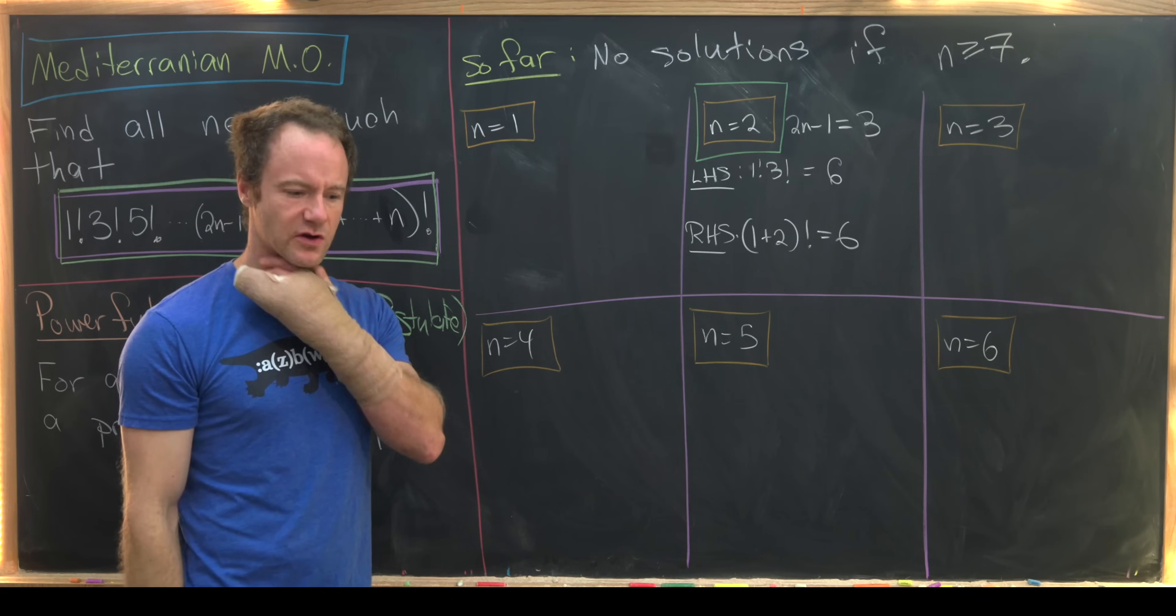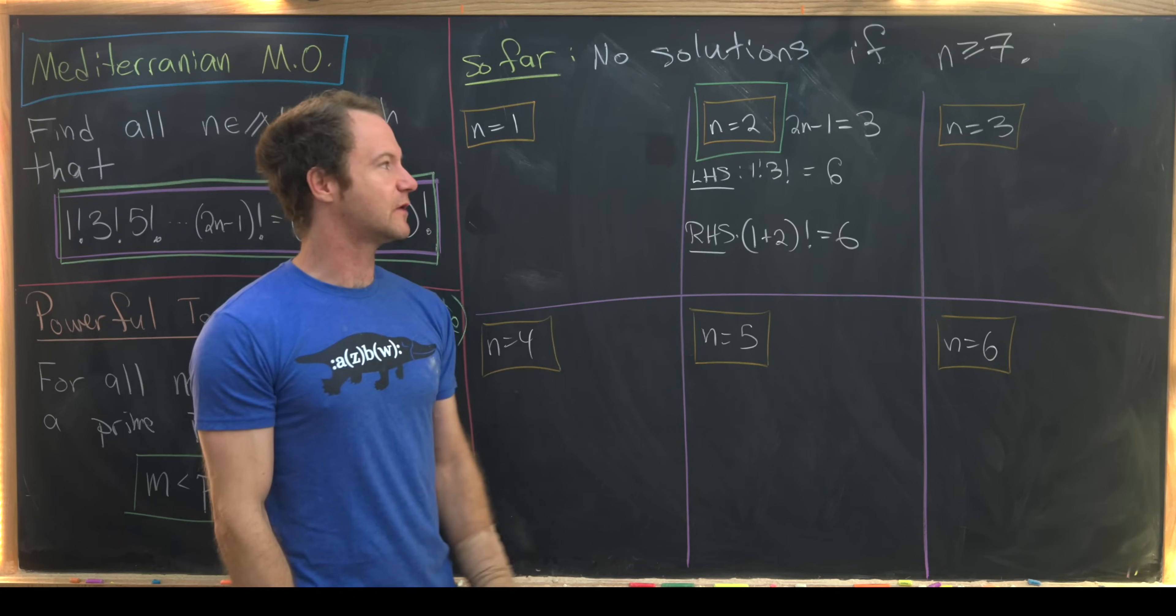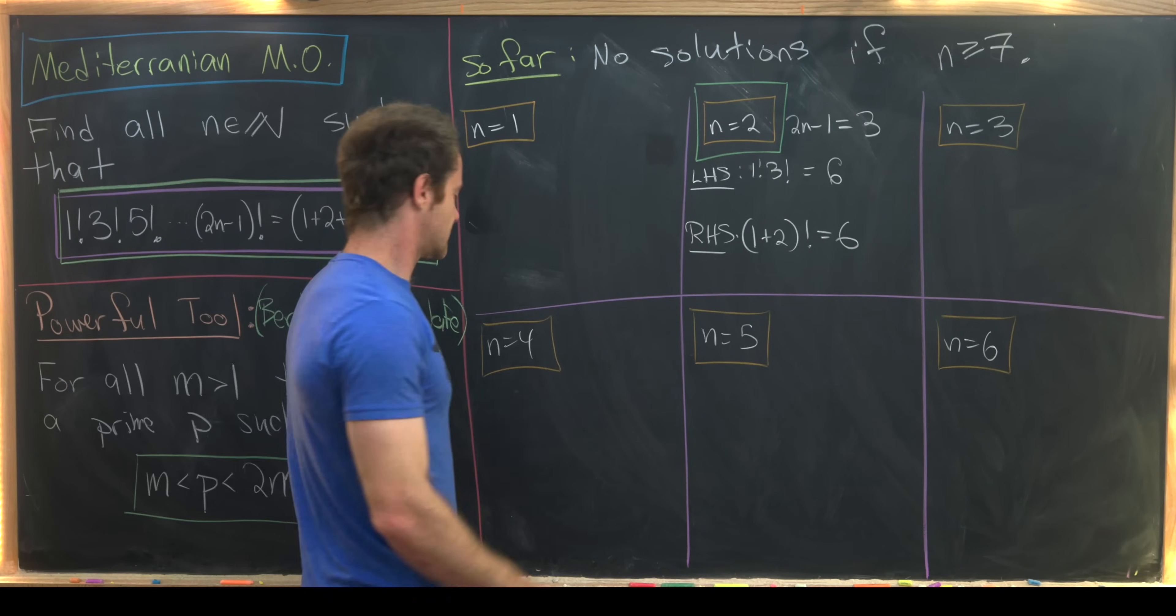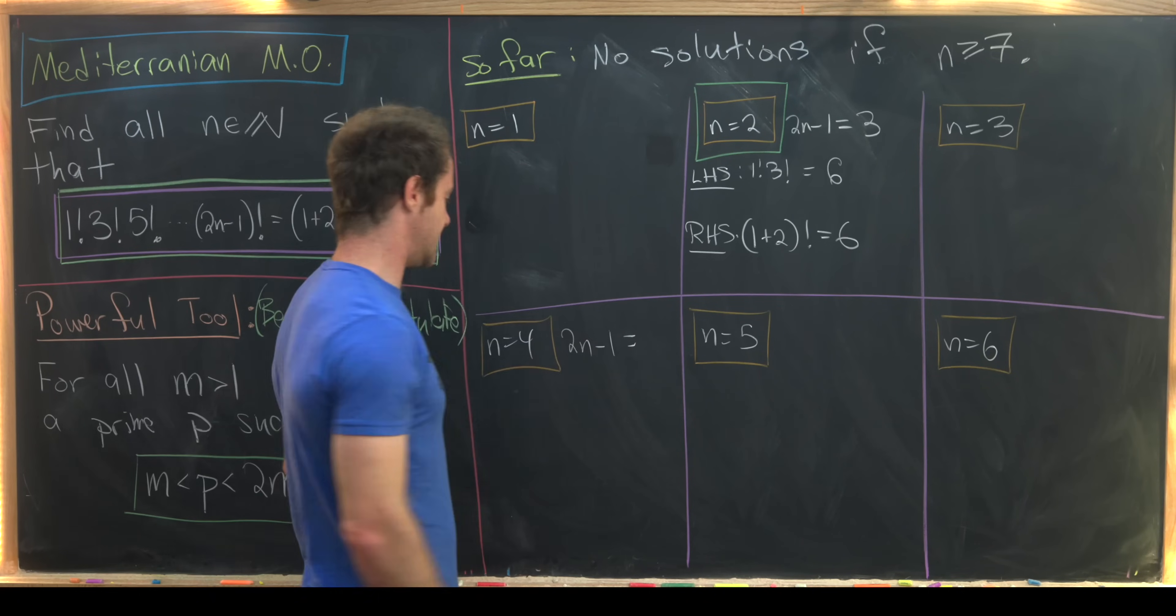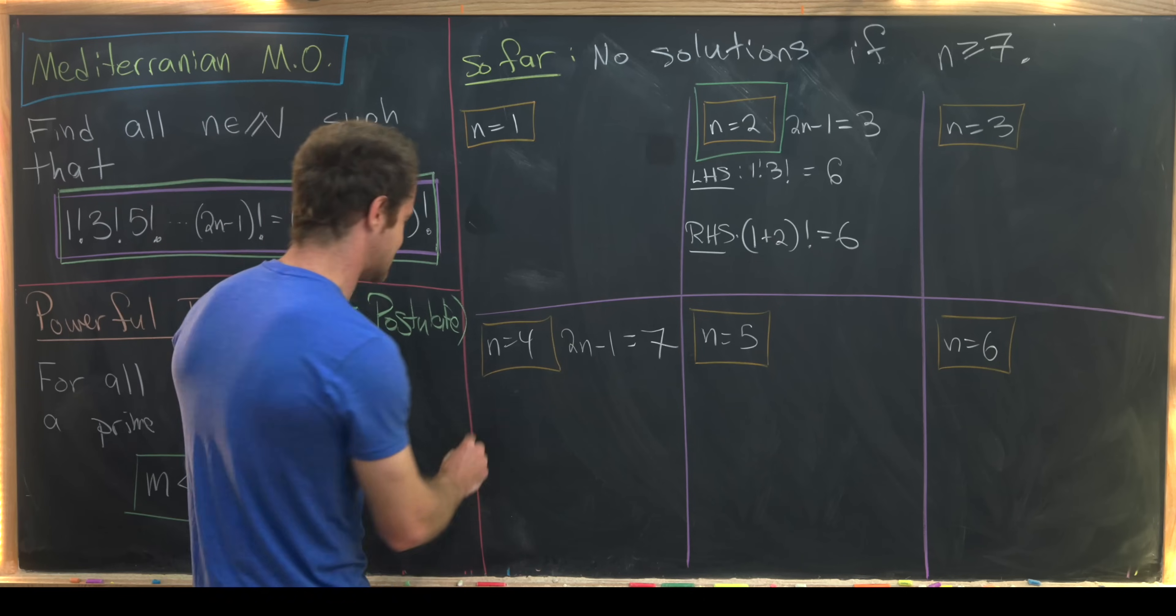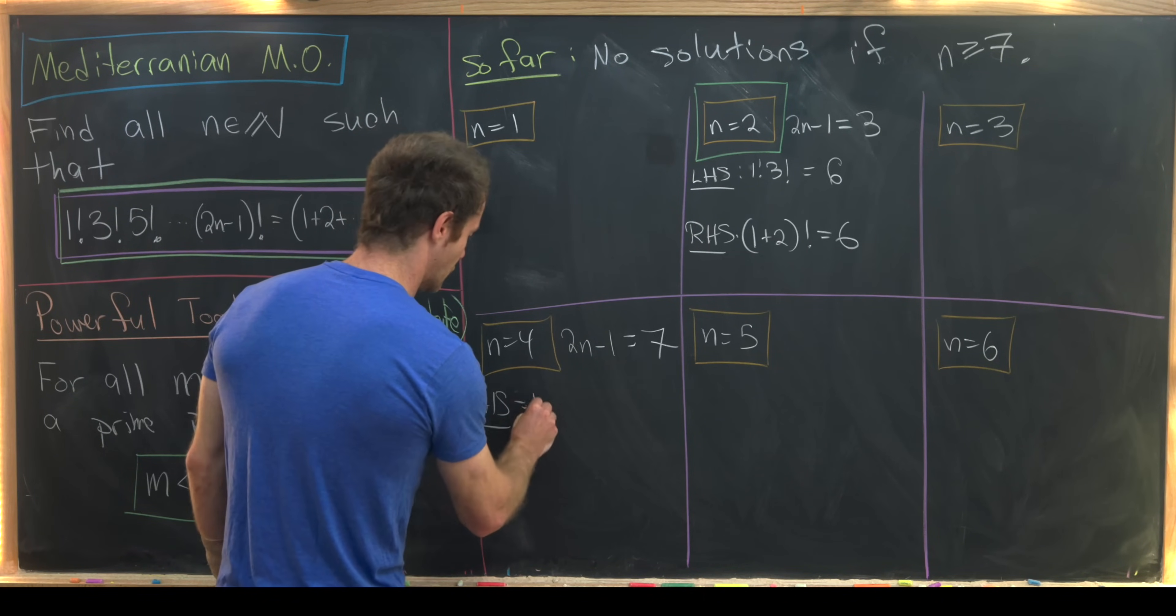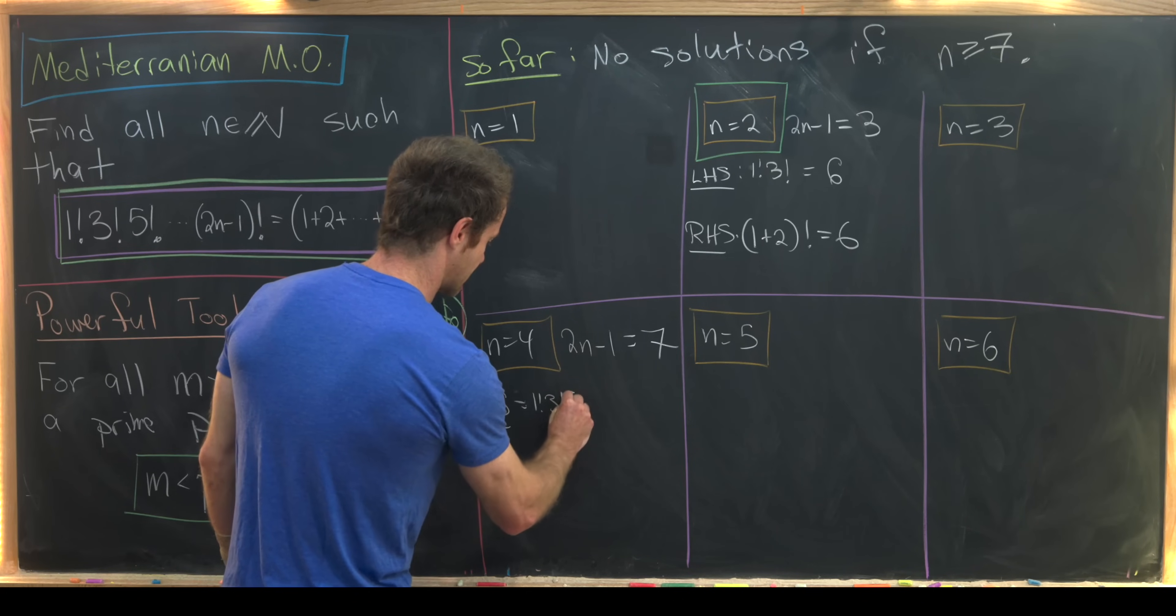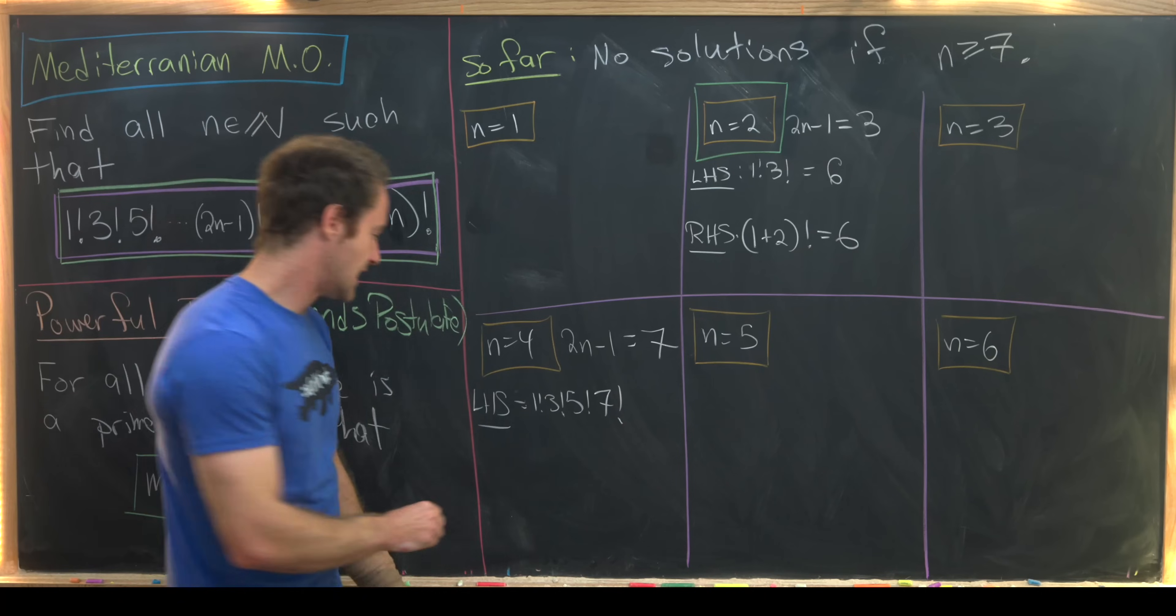Okay, let's maybe look over at this n equals 4 case. We'll leave n equals 3 for you guys. So let's see, if n equals 4, then we have 2n minus 1 is equal to 8 minus 1, which is 7. Okay, that means our left-hand side is equal to 1 factorial, 3 factorial, 5 factorial, 7 factorial.